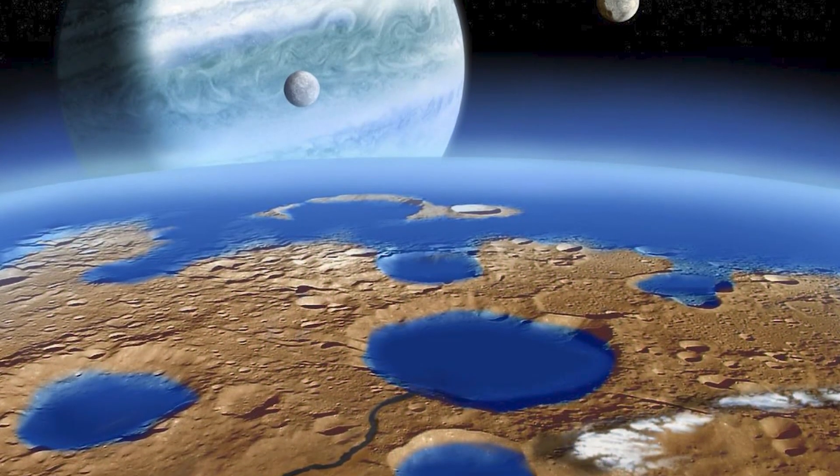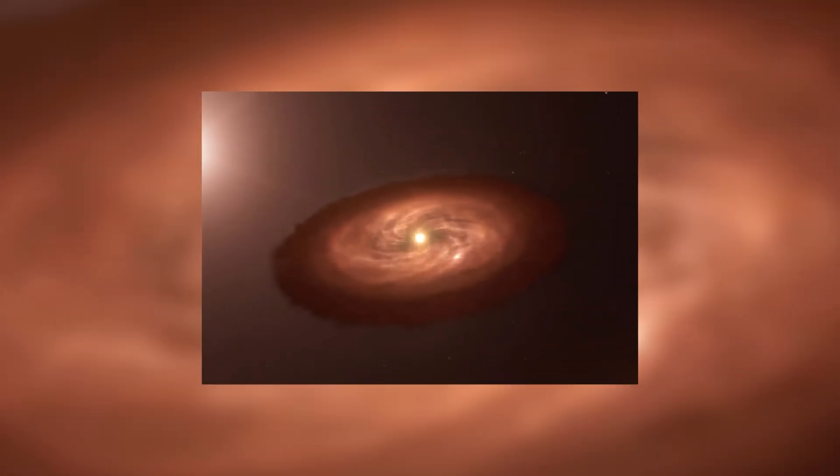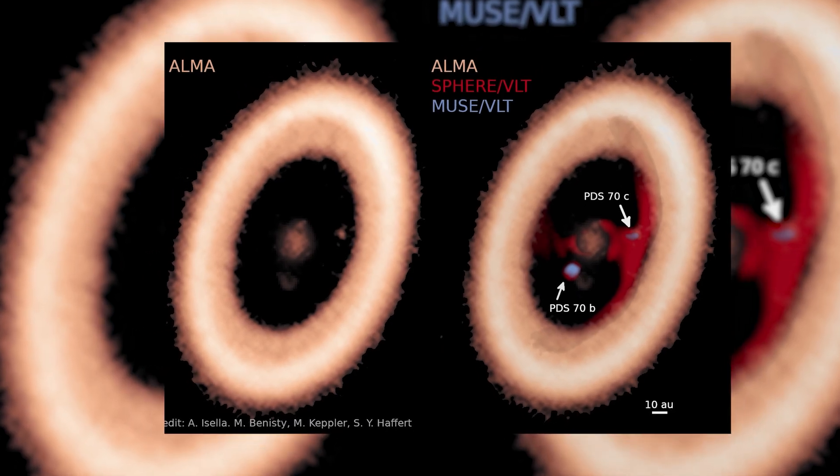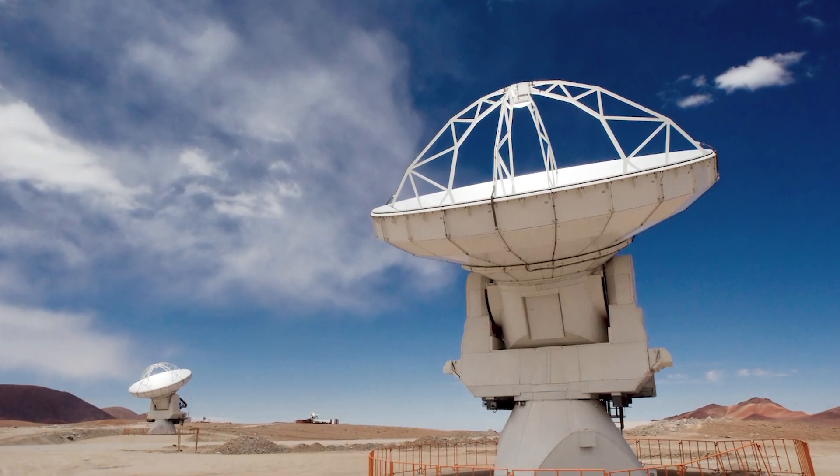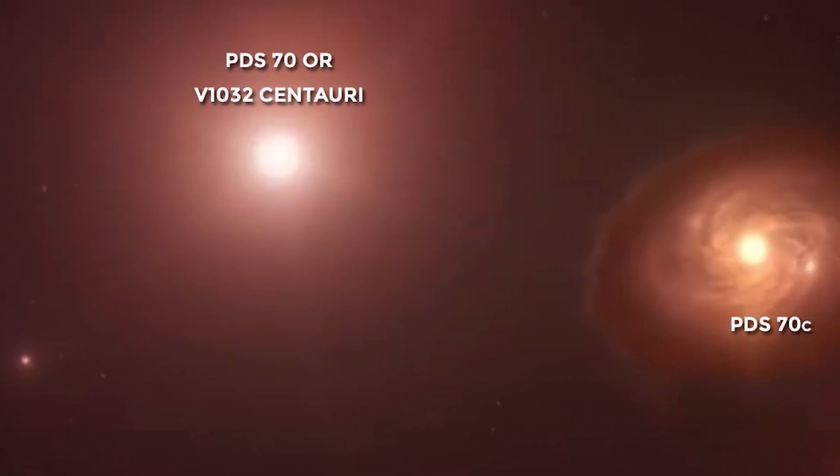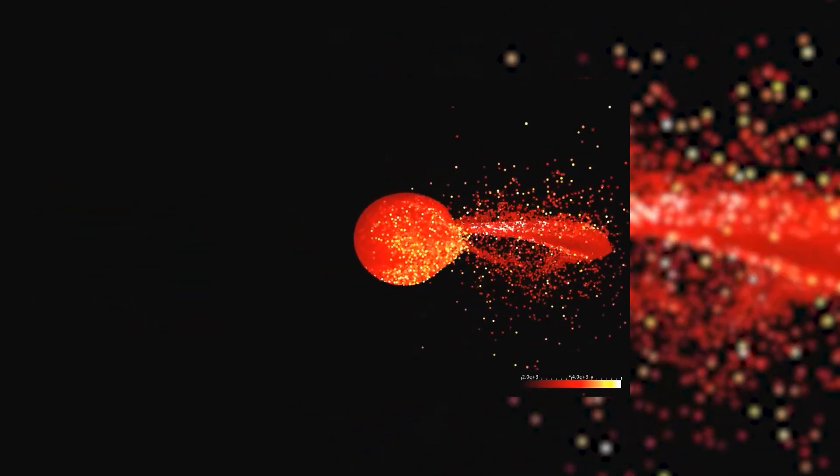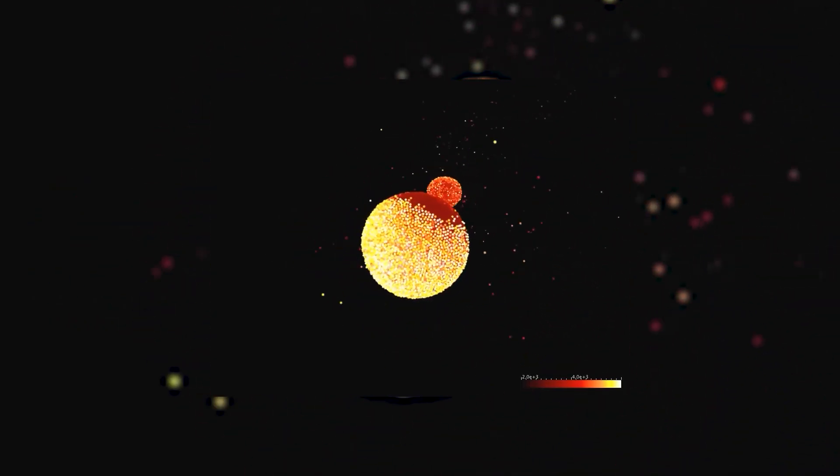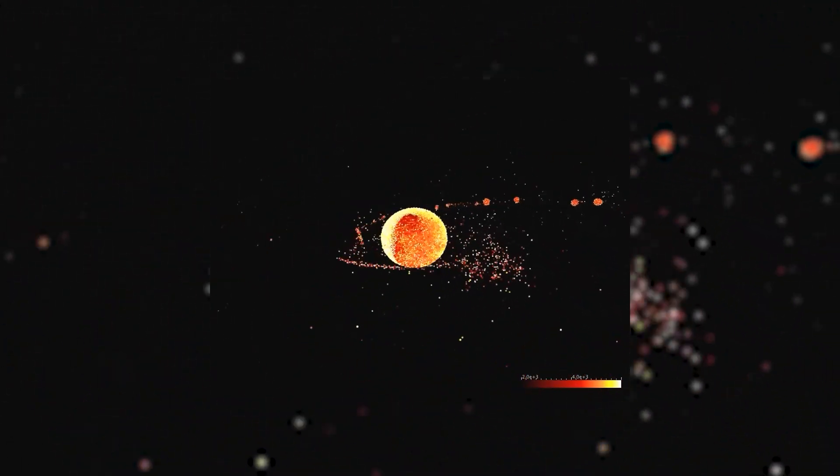While they didn't spot an exomoon, they found something even more exciting. The first clear evidence of a moon-forming disk around a massive exoplanet named PDS-70C. Using the ALMA telescope in Chile, scientists detected a disk where moons could eventually form. There's enough material there to create three moons, each roughly the size of Earth's moon. This marks the first time humans might witness the formation of these small worlds in space, not through a computer simulation, but in real life.